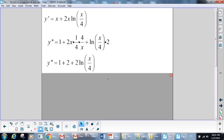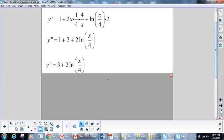We simplify our algebra. That leaves us here with 2, and the x's divide out, plus writing this with our properties, 2 times the ln of x over 4. And simplifying further, we're left with 3 plus 2 ln of (x/4).